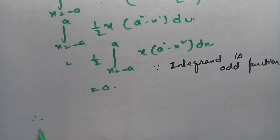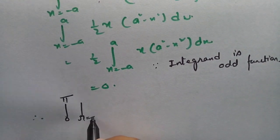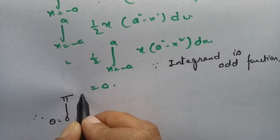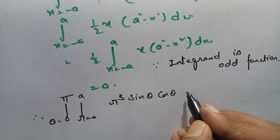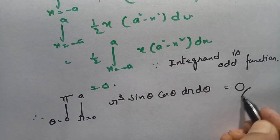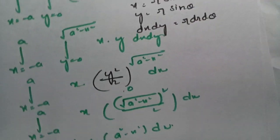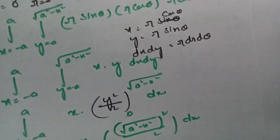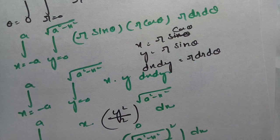Therefore the integral from 0 to π and 0 to a of r³ sin θ cos θ dr dθ equals 0. This is how we solve it. Thank you so much — I am extremely grateful to all my viewers for watching these videos. Please pass it on to your friends, subscribe to the channel, share it, and give a thumbs up if you liked this video.